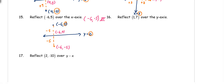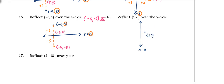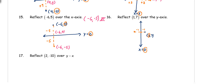Number 16: reflect over the y-axis, which is x equals 0. The point is (1, 7), on the right side of the y-axis. To get from 1 to 0 in the x coordinate, subtract 1. Subtract 1 again: landing at (0, 7), then (-1, 7). So the reflected point is (-1, 7), which is in the second quadrant.